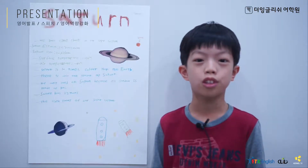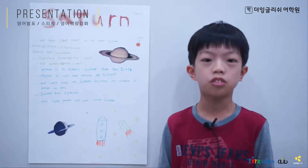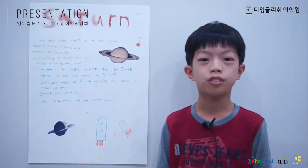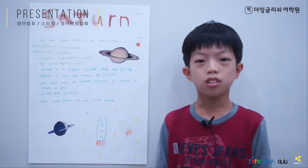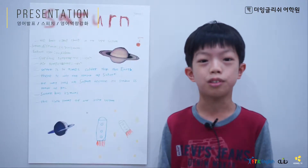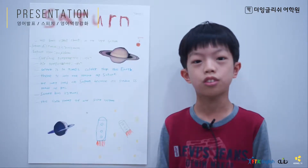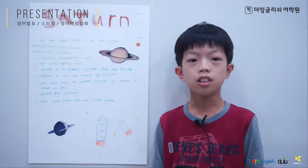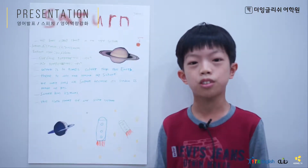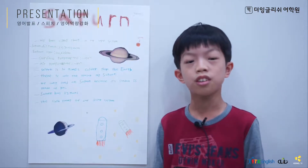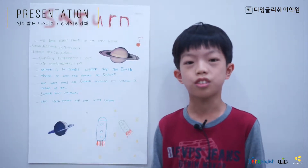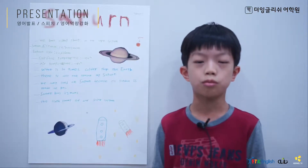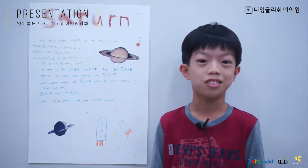Today I am going to tell you about Saturn. The distance from the Earth to Saturn is 12,700,700 km. The size of Saturn is 120,536 km. Saturn's surface temperature is minus 179 degrees Celsius. Saturn's air temperature is minus 180 degrees Celsius.